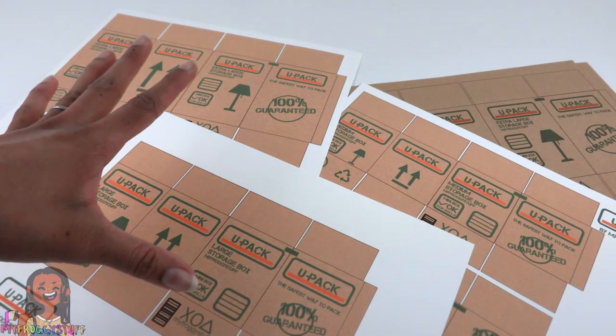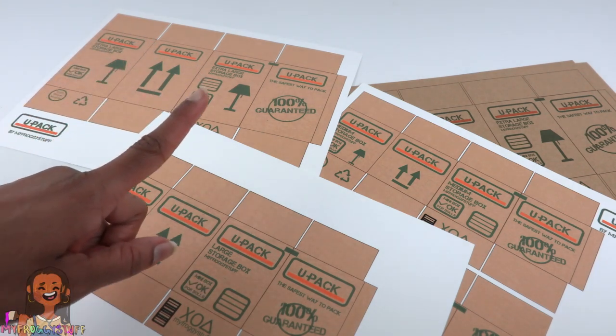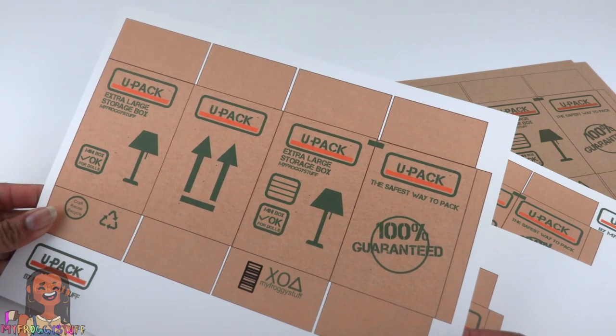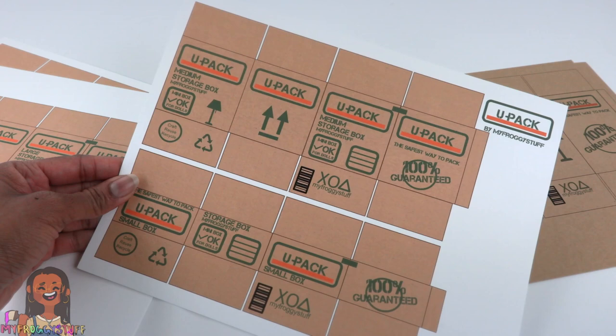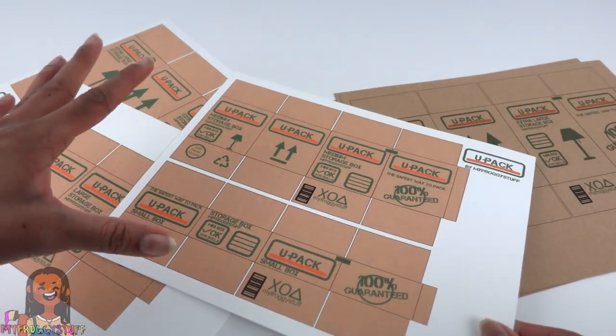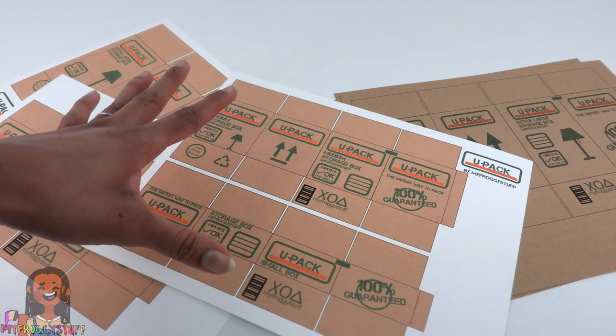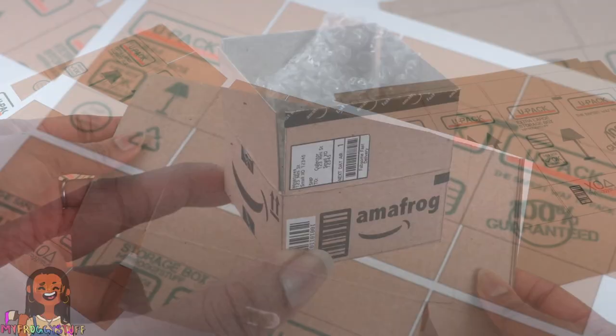The storage boxes come in four sizes: extra large, large, medium, and small. I printed these on white cardstock, however you can also print them on white paper and glue it onto recycled paperboard and cut it out just like we did for our Amazon inspired boxes.